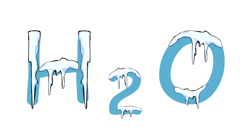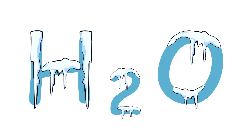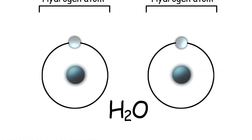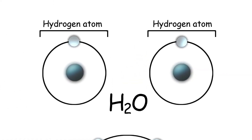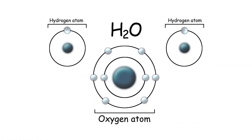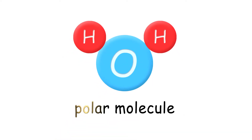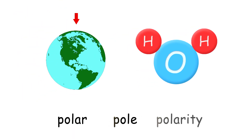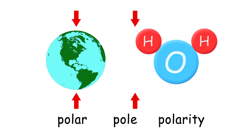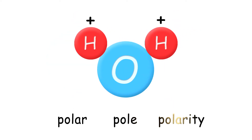It expands. To puzzle out the riddle of ice, look at the H2O molecule itself: two smaller atoms of hydrogen bonded to one larger atom of oxygen. H2O is a polar molecule — the same way our planet has two opposite poles, the H2O molecule has two polar opposite sides.